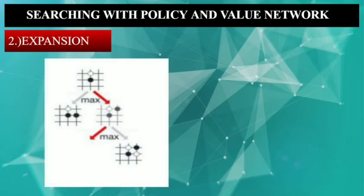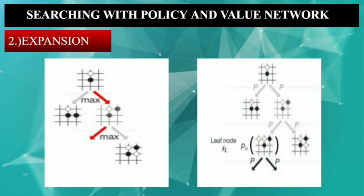Next comes Expansion. We add more positions into the tree reflecting what moves we have tried — that is, we expand the tree. The edges, which are the state-action pairs, are initialized using the Supervised Learning Policy Network. Why not the RL Policy Network? Because the SL Policy Network learns from human expert games, and we humans tend to explore more diverse moves. So to our selected path, we add a new node to expand the tree, whose value will be calculated using the Value Network.